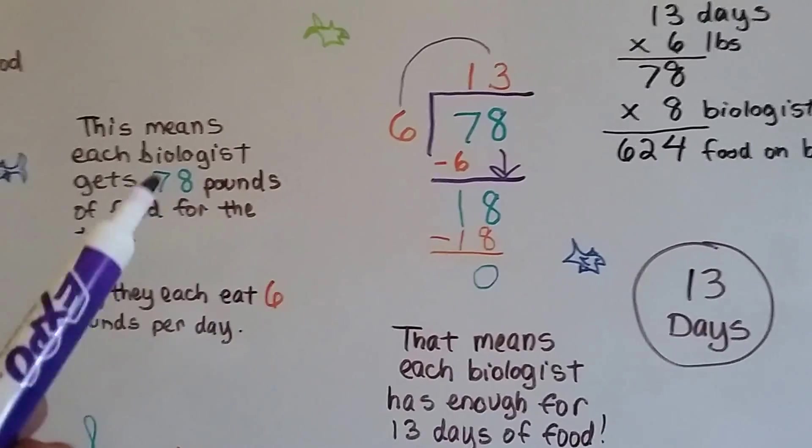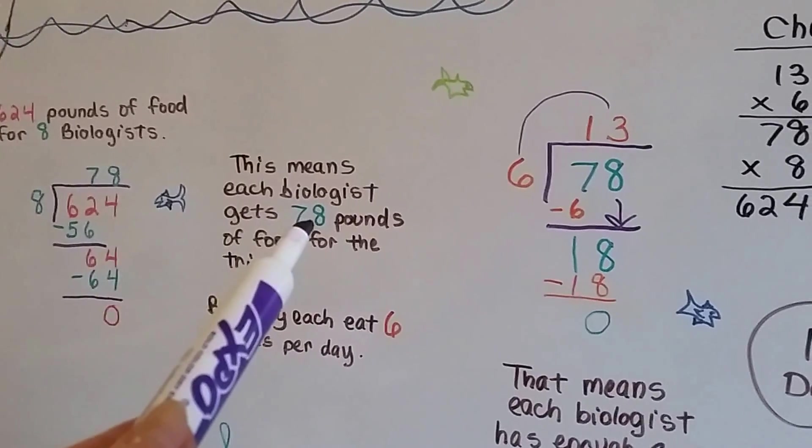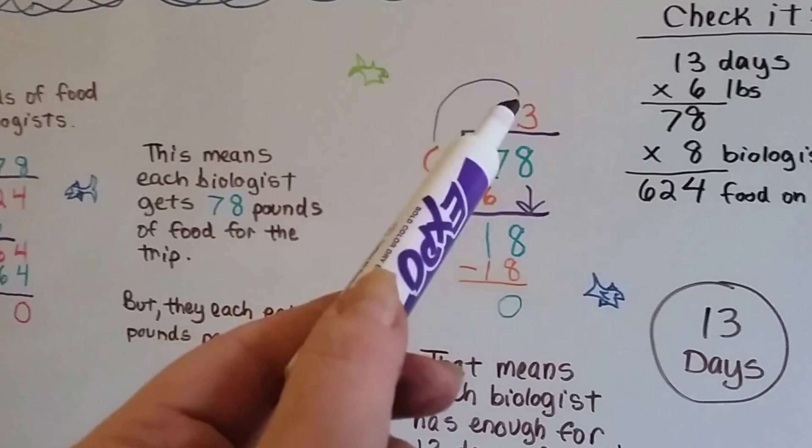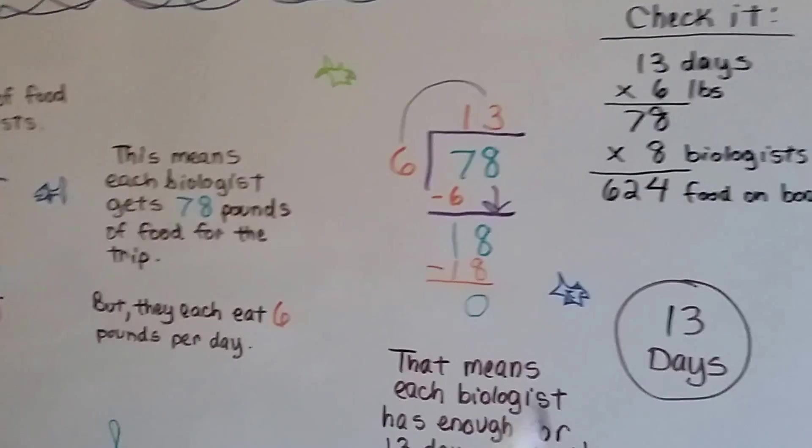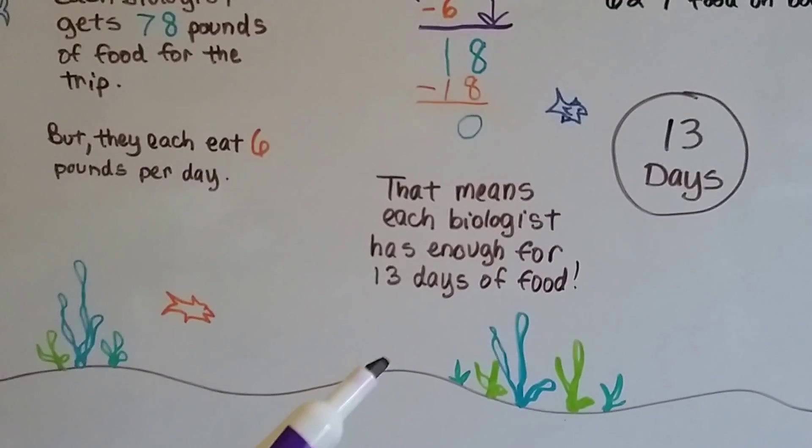So one biologist got 78 pounds out of that big group of 624. And split into six pound groups, there's 13 groups. So that means each biologist has enough food for 13 days.